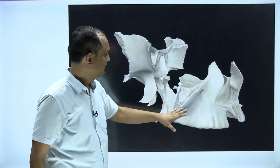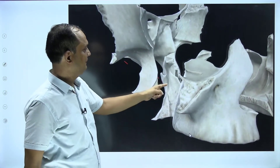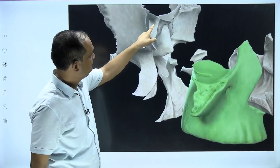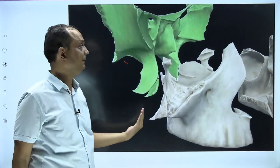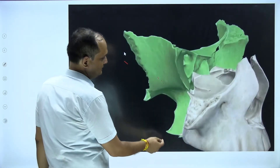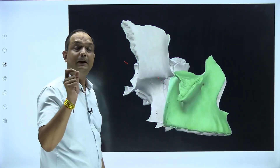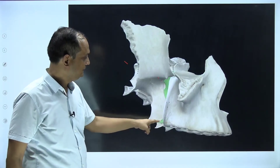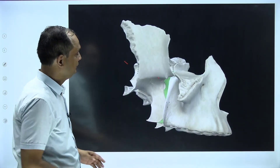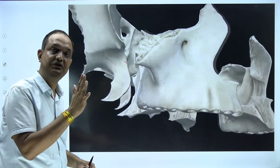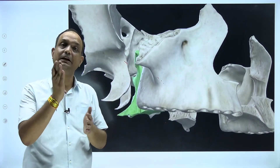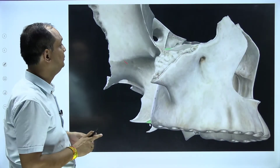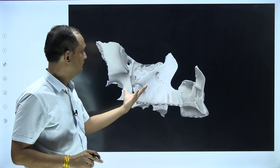When you place the maxilla alongside the sphenoid and palatine bones, you can see the gap that is present behind the maxilla and on the lateral side of the perpendicular plate. An important feature: the pyramidal process of the palatine bone comes between the posterior part of the maxilla and the lower end of the pterygoid process. In the norma lateralis, appreciate this gap and follow the pterygomaxillary fissure to enter it.